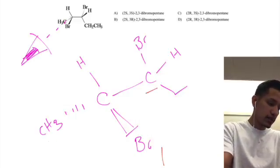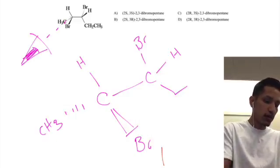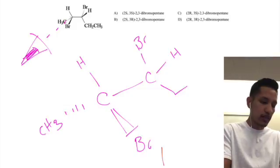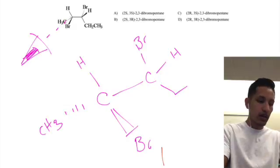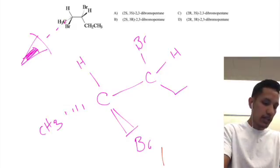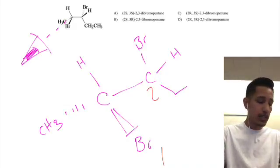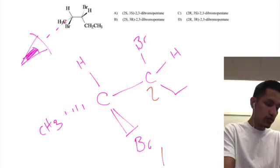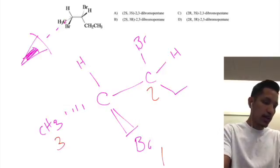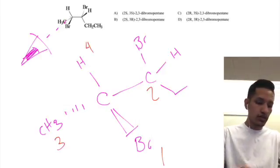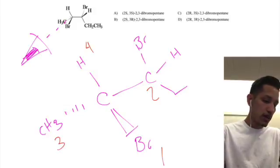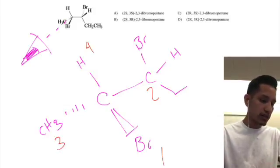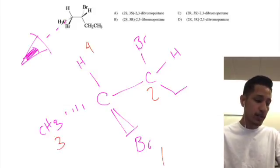Since the methyl group is attached to three hydrogens, while our third carbon is attached to a bromine, another carbon, and a hydrogen, that would take our second priority. Our third priority then would go to the methyl, and our final priority, as usual, goes to the hydrogen. And so now we've prioritized the four substituents on this chiral carbon.